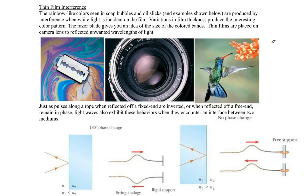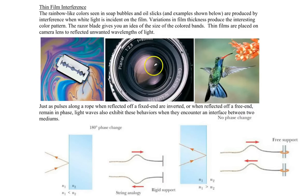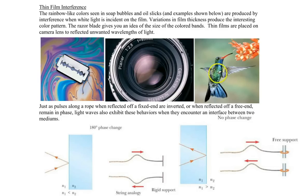Welcome to our discussion of the interference of thin films. Thin film interference is observed in many different things: oil spills, the protective coating put on lenses to eliminate certain frequencies like UV, and the iridescence from a hummingbird's feathers. The beautiful rainbow-like colors you see in soap bubbles or oil slicks are all part of thin film interference.